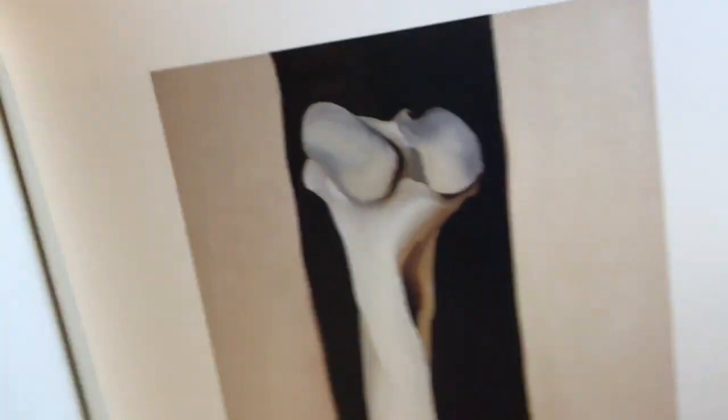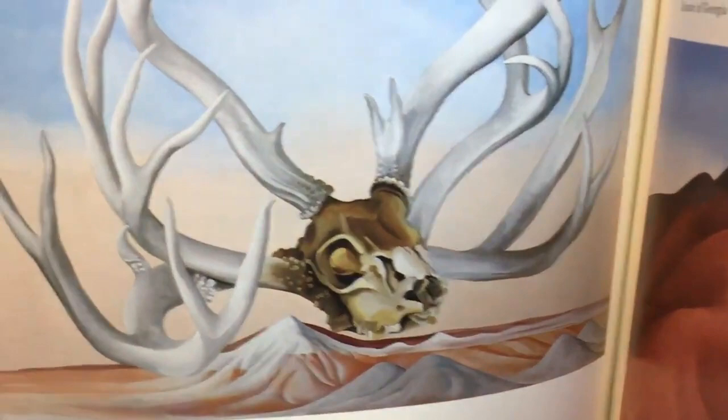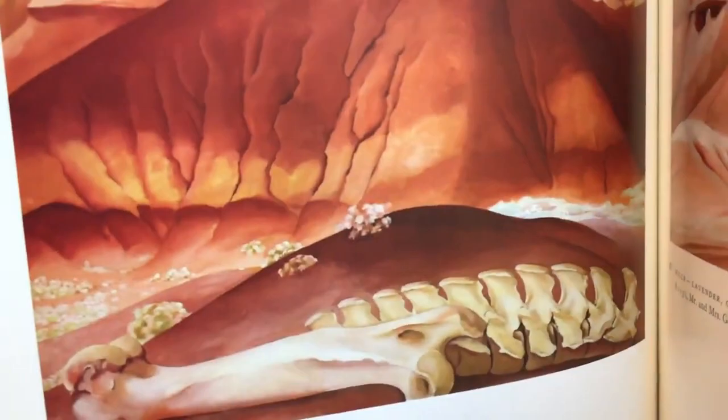This one right here is a skull of a horse. Oh, this one's really cool. See all the antlers? I think that must have been a deer. Pretty cool. There's a bone on the ground there. Do you see that?